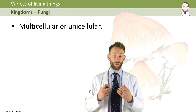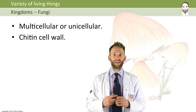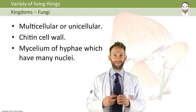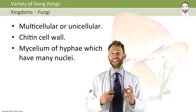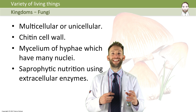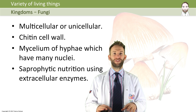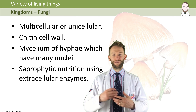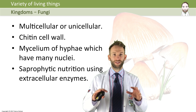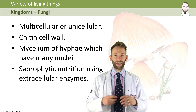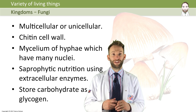Fungi can be multicellular or unicellular. The cell wall is made of something called chitin, and it's made of a network of fibers called a mycelium of hyphae, and they have many nuclei — they are multi-nucleated. They feed by something called saprophytic nutrition using extracellular enzymes. They secrete enzymes onto their food, the food breaks down externally, and then they absorb the resulting smaller nutrients by diffusion. They store their carbohydrate as glycogen, the same form as animals.